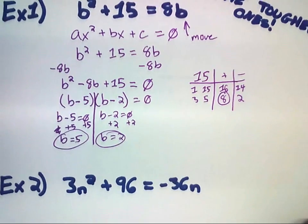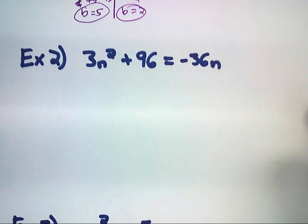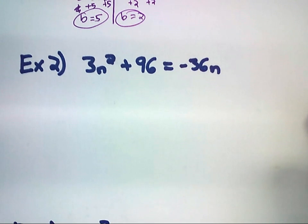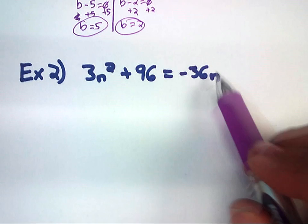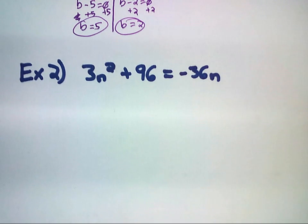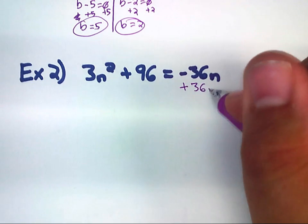Here's another example just to show you how they might combine some different techniques here. We have 3n squared plus 96 equals negative 36n. So, again, we have one term over here that we need to join the other side. We need them to all be together. So, what I'm going to do is I'm going to add 36n to both sides.